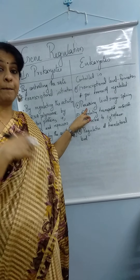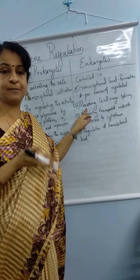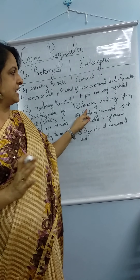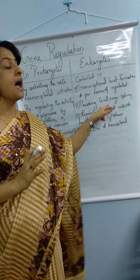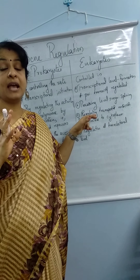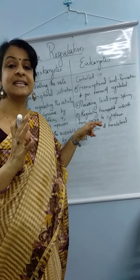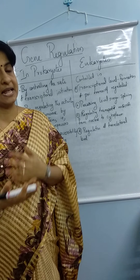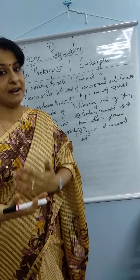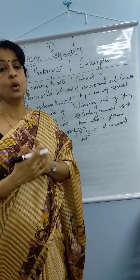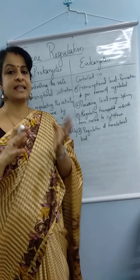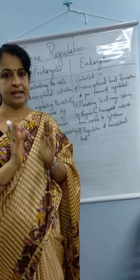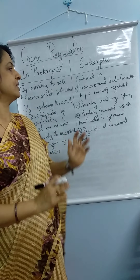The second way is after the primary transcript is formed. We can regulate the splicing process — that is, the hnRNA undergoes splicing to become mature mRNA, and we can prevent or regulate that splicing process.